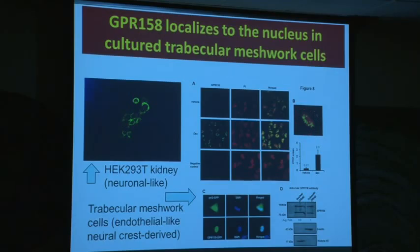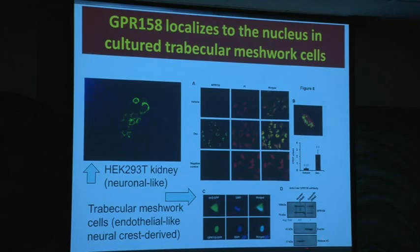As you can see best in this enlarged photo, the red is the nuclear staining and the green is where the protein is localized. It seems to be in very discrete areas in the nucleus. A western blot indicates there's a cleavage somewhere near the end of the cytoplasmic tail, but both of the fragments appear in the nucleus.